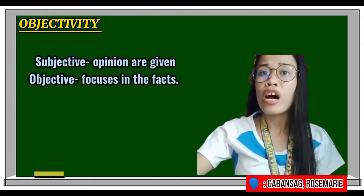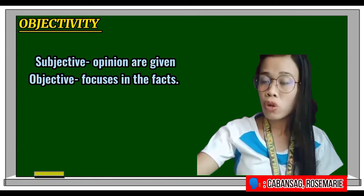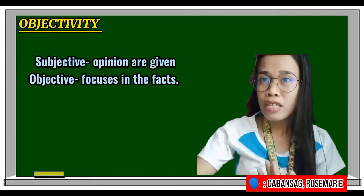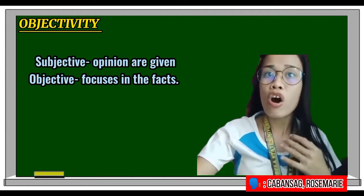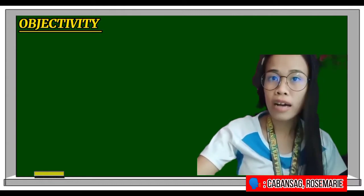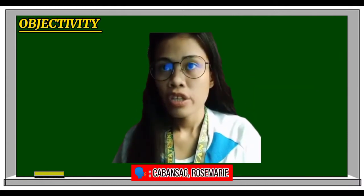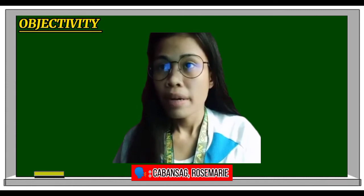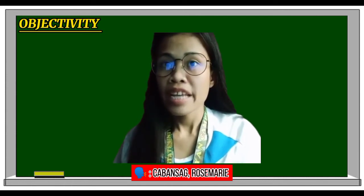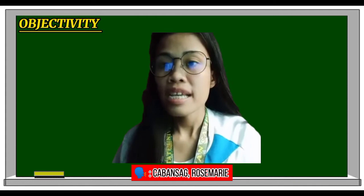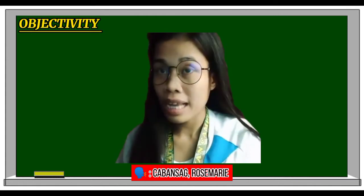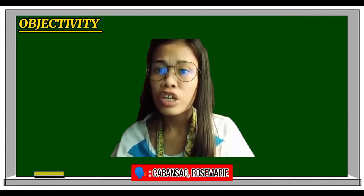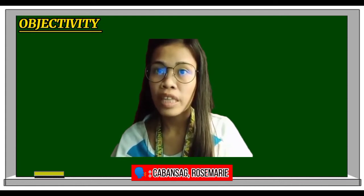Subjectivity focuses more on opinion, while an objective test focuses on facts. Objectivity pertains to what is factual. An objectivity test is a test that uses a single interpretation or a single answer. It means giving a factual answer based on the textbook or reference material. If the answer involves an essay, reflection, or opinion, it is no longer an objectivity test but a subjectivity test, since the answer is based on personal opinion.